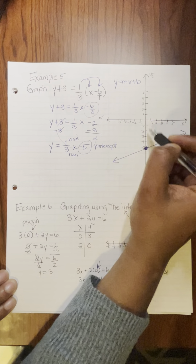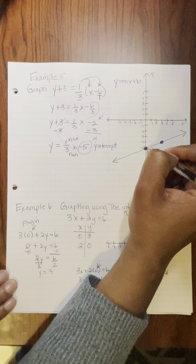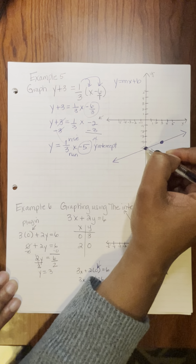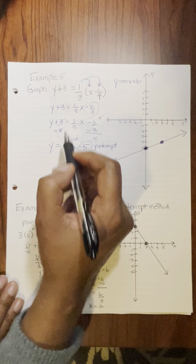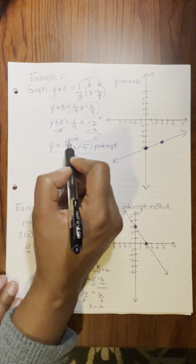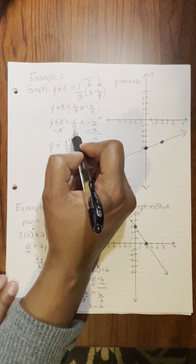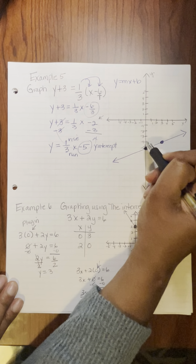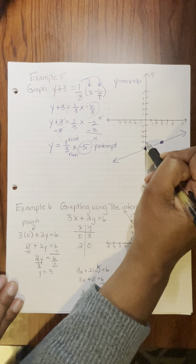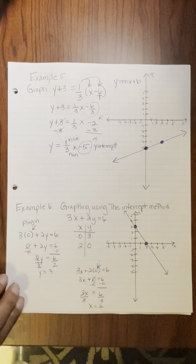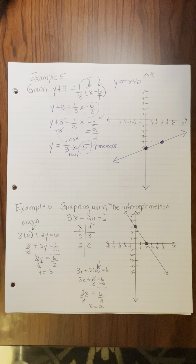This is my y-intercept, and this is where I want you to start. I come over to my y-axis, and I go down to negative 5. This 1 third is my rise over my run — so I'm going to rise up 1 and run 3: rise up 1 and run 1, 2, and 3, and then connect your line.